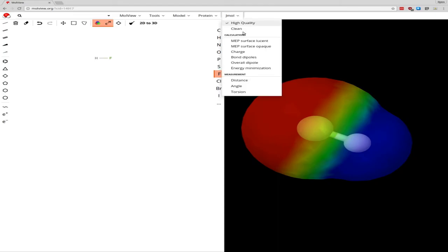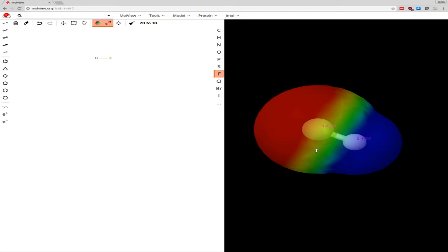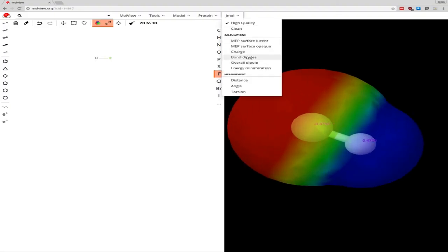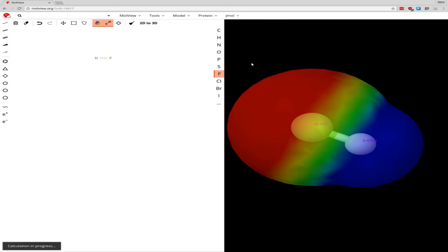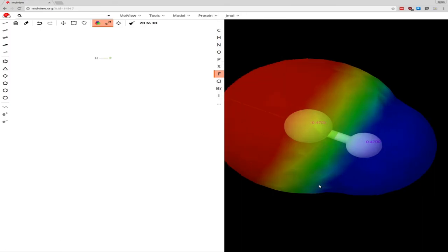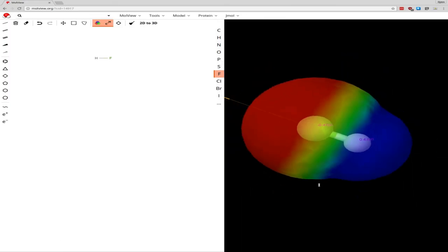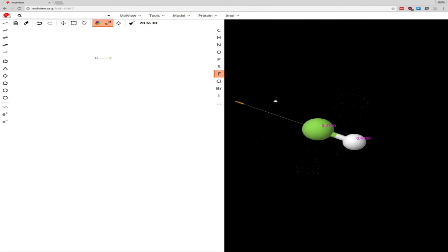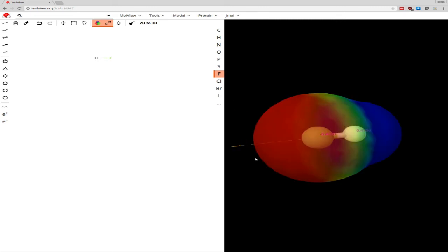We can also ask to calculate charges directly on these atoms. We can get the bond dipoles, and even the overall dipole of the molecule. Note that Malvue uses the convention of pointing from positive to negative. So this arrow is pointing towards the fluorine instead of the hydrogen.